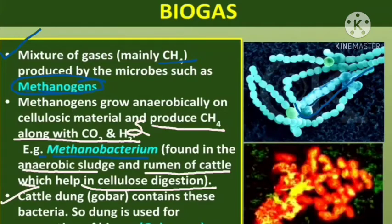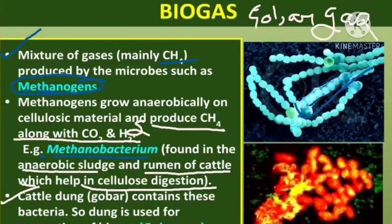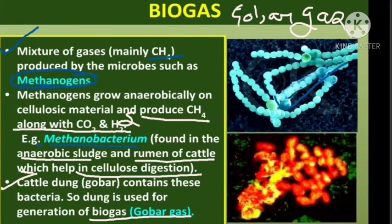We call this biogas 'gober gas' because it is generally generated from cow dung. Cattle dung is why we call this biogas as gober gas. This is the picture of these microorganisms — the microbes.